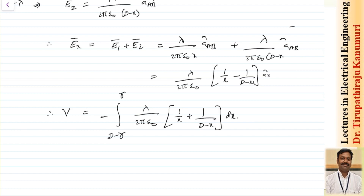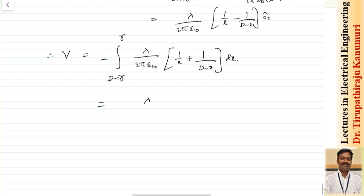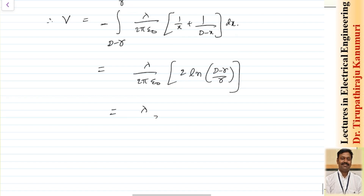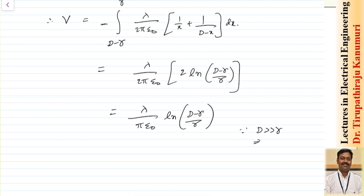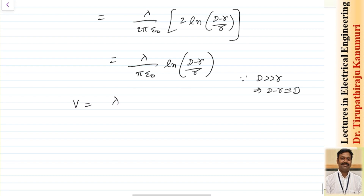Evaluating the integral, we get V = (lambda / 2π ε₀) × 2 × ln[(d − r) / r]. Since d is far greater than r, we can approximate d − r ≈ d. Therefore the potential between the two conductors simplifies to V = (lambda / π ε₀) × ln(d / r).